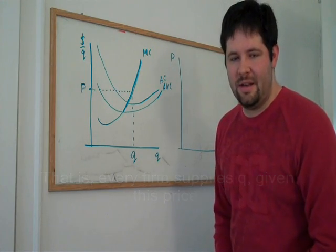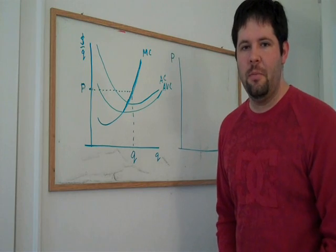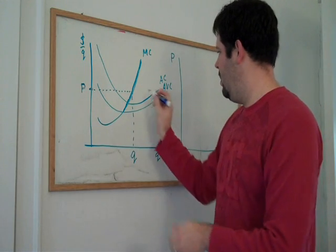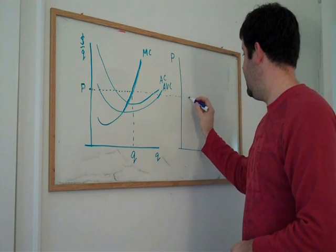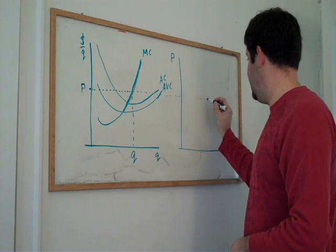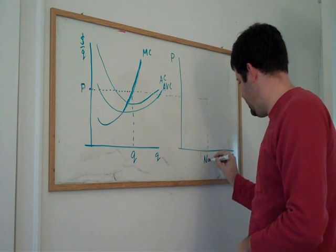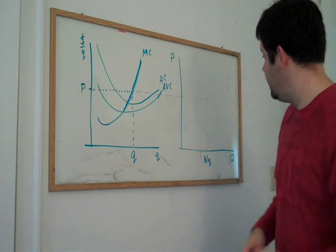Suppose there are 10,000 firms just like this particular firm. What would happen is, at a price of P, we can bring it over here to this axis, and we can say that the total quantity in this industry is 10,000 times the quantity that each firm provides.